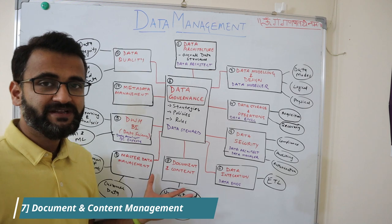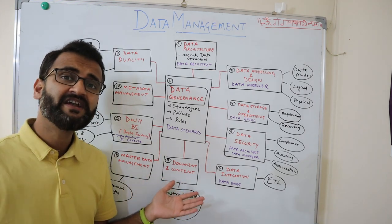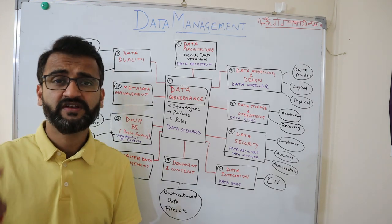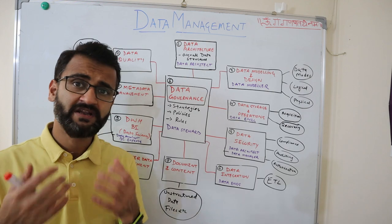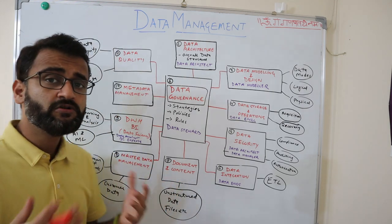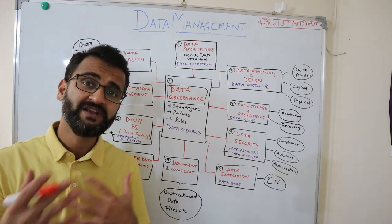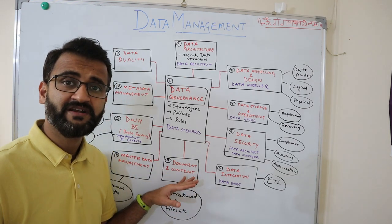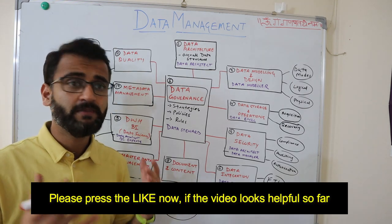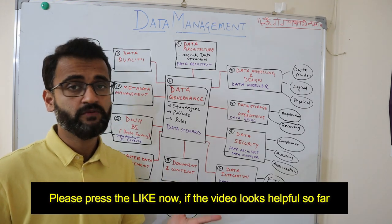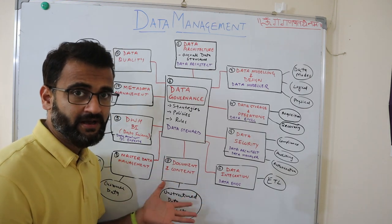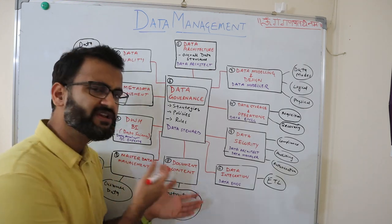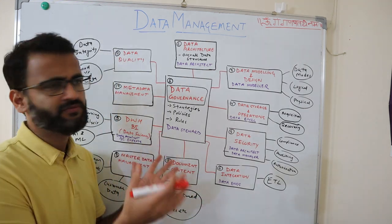Document and content management is another important area related to managing all the unstructured data in your enterprise — your images, files, unstructured data, legacy documents, PDFs, and so on. Everything to do with documents is maintained under your document and content management strategy. It is not relational data, but all this unstructured yet crucial information is managed under this area. It is not a very prominent area with a dedicated role, but it falls into the bigger picture.